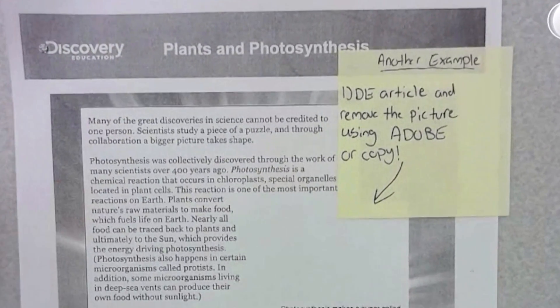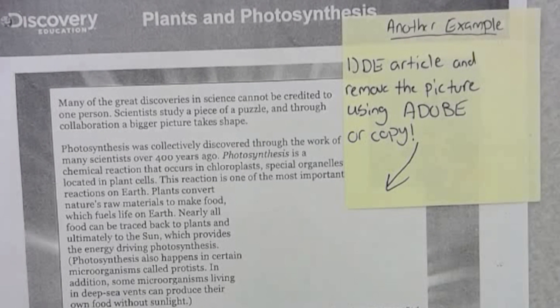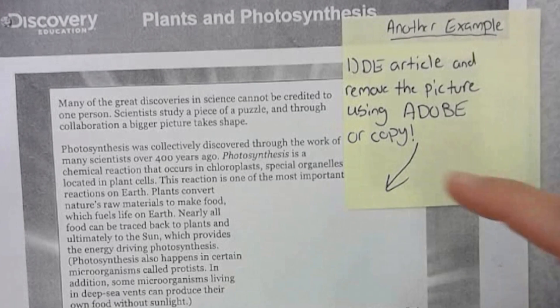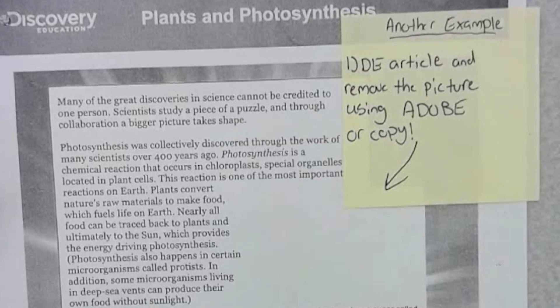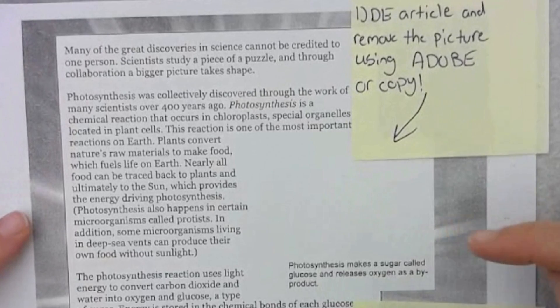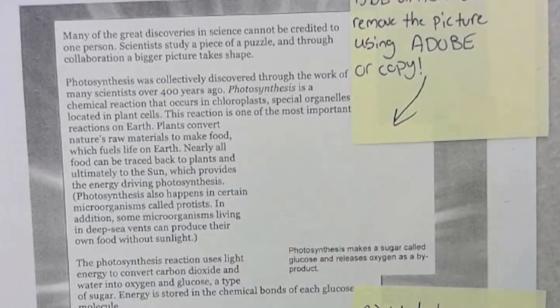Here's a second example — a science example about plants and photosynthesis. This article was taken from Discovery Ed., and a picture was removed. You can remove the picture using Adobe or just a copier. The caption under the picture was left. Students would read through this particular article and then draw in the blank space a picture to symbolize or represent what the caption means.